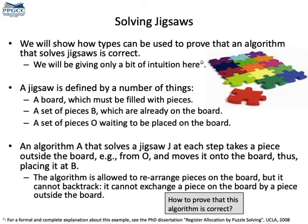We can also use types to prove properties of all programs. As an example, let's consider jigsaws as a metaphor. Let's imagine that we have a hypothetical algorithm to solve a jigsaw. This algorithm, at any step, moves a piece from outside the board to the board. How can we prove that the algorithm is correct?